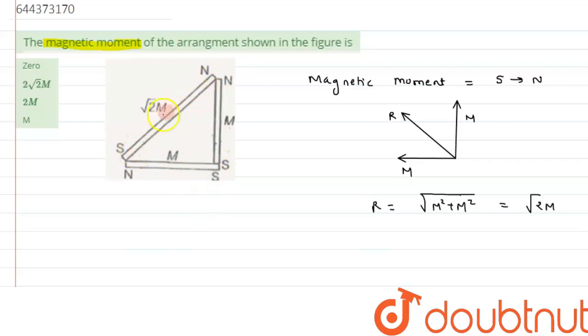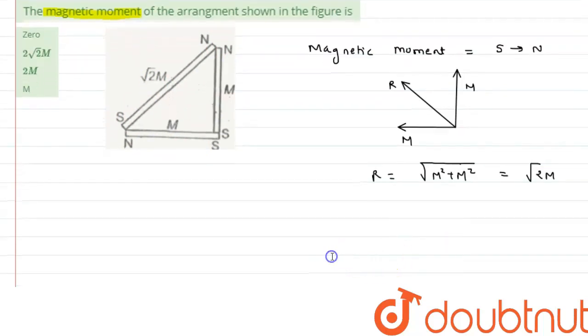So we can reconstruct it over here. We can see this magnet is having a dipole moment in this direction, south to north, and having a value of dipole moment as root 2M.